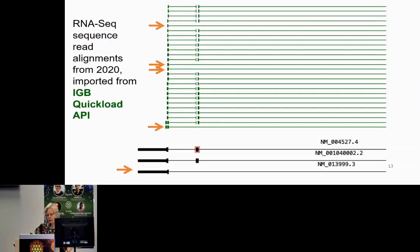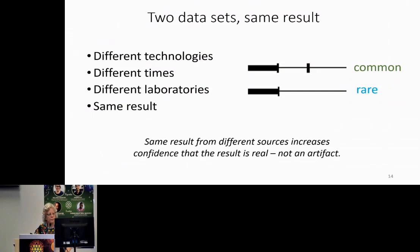That's why we need to look at other data. The RNA-seq dataset is basically saying the same thing — we have a lot of aligned sequence reads, and only a small number of them support the exon-skipped variant. So we have two datasets made with entirely different technologies, at different times, in different laboratories — same result.